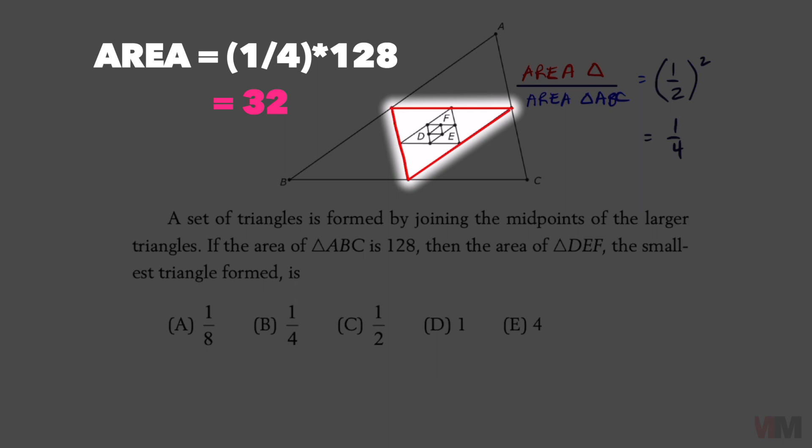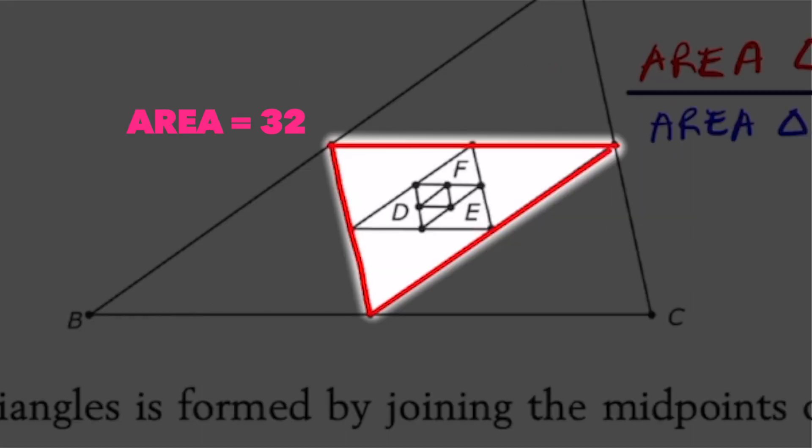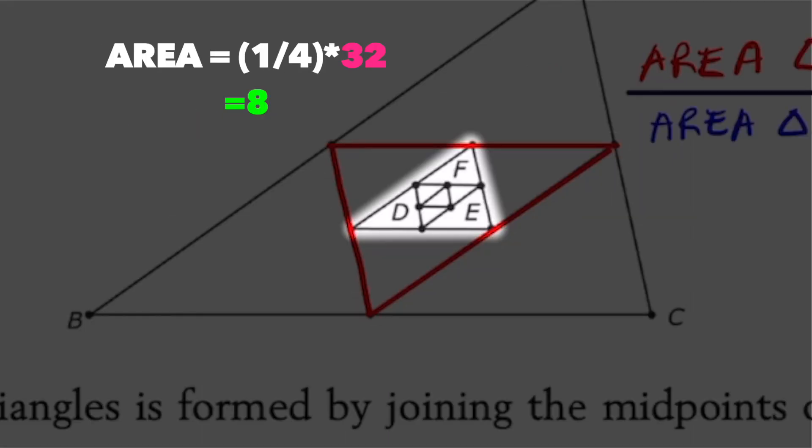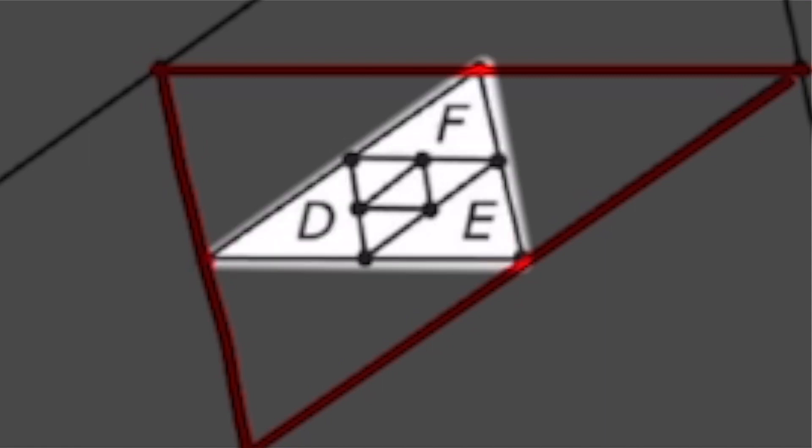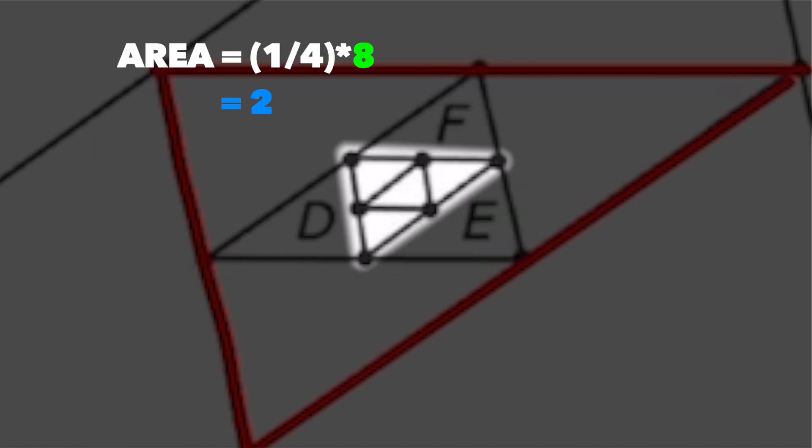And that is going to be the same pattern throughout all these tiny triangles inside. So if the area of this red triangle is 32, then this triangle is going to be one fourth of that size, which is going to equal eight. Doing that again, this triangle is going to be one fourth of that one, so that's going to have an area of two.